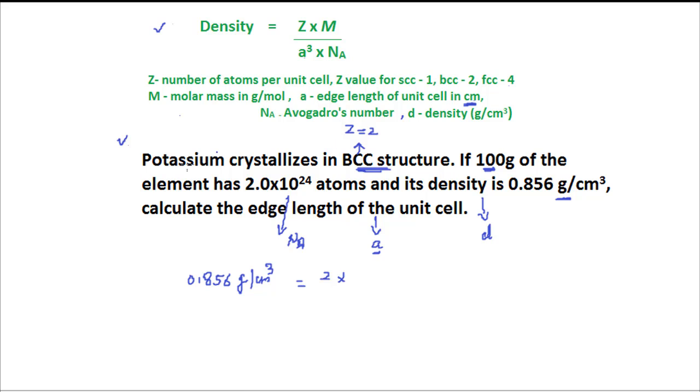And next is atomic mass of this element, potassium element. Atomic mass of potassium element, you can find the value from the periodic table 39.098 and it is in gram per mole divided by A cube because A is to be measured. This is the volume of unit cell multiplied by number of atoms. Here we have number of atoms 2.0 multiplied by 10 to power 24.